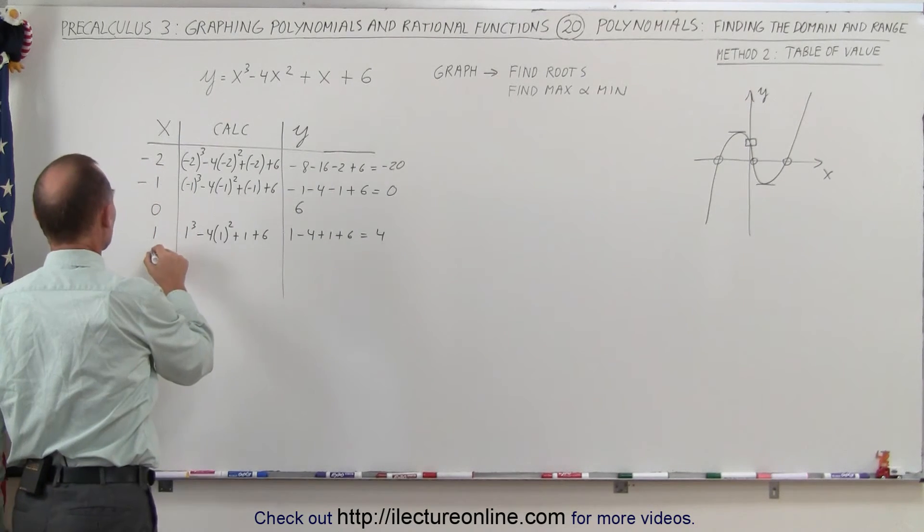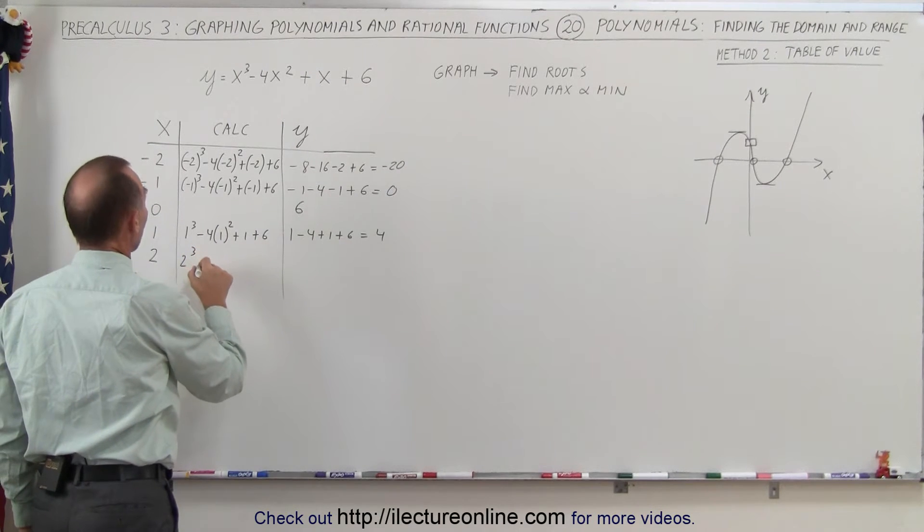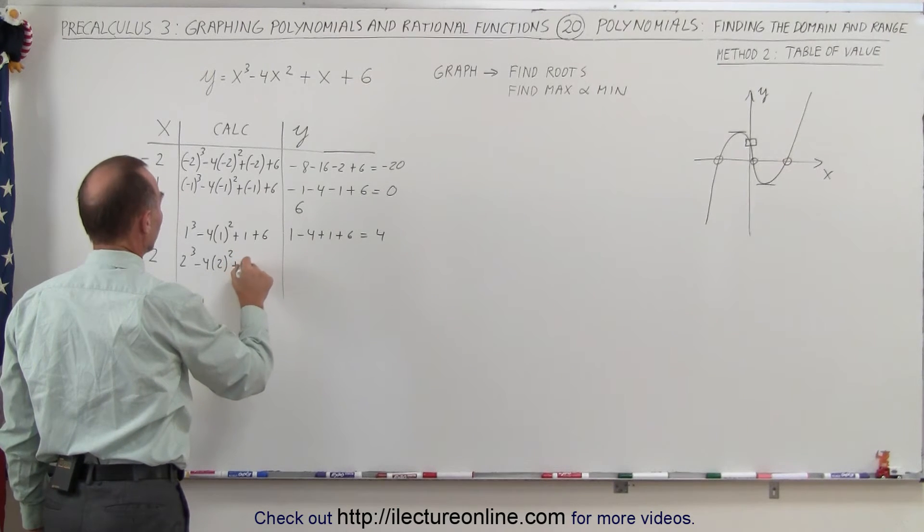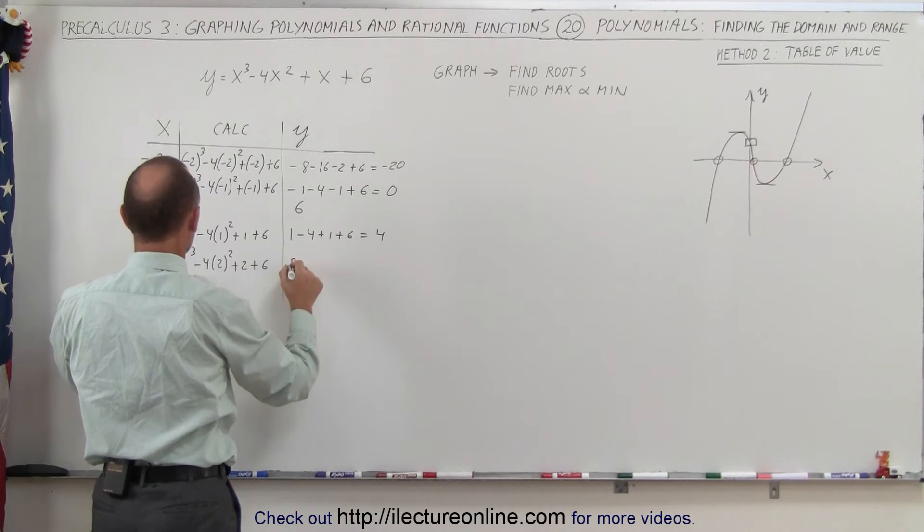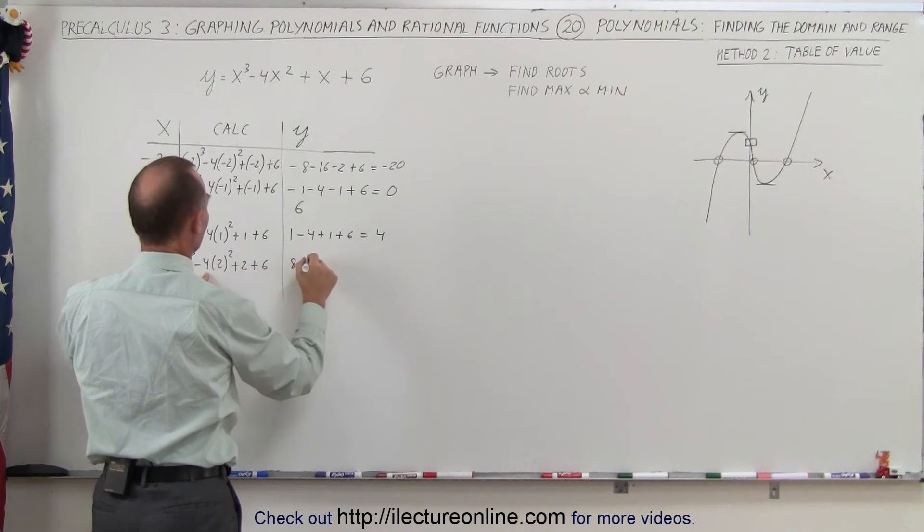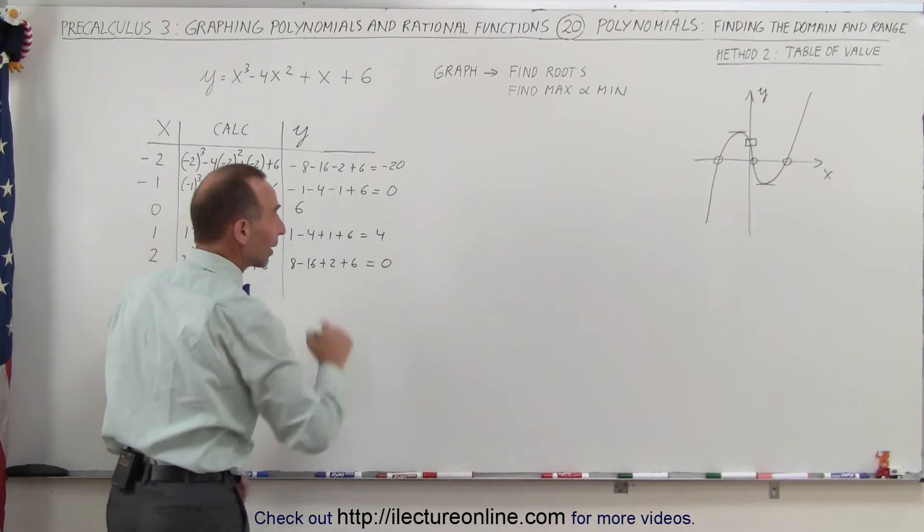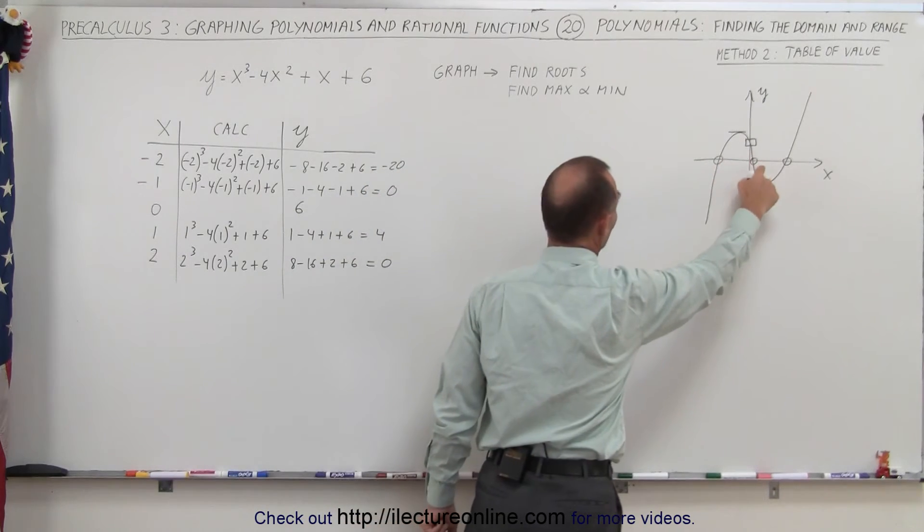So now at least we know what the general structure will look like. Continuing on let's try the number 2 here for x. X equals 2. That gives us 2 cubed minus 4 times 2 squared plus 2 plus 6 and so that would be equal to 8, that would be 4 minus 16 plus 2 plus 6. That is 16 minus 16 is equal to 0. Looks like we found our second root. So we have found our first root, our second root.